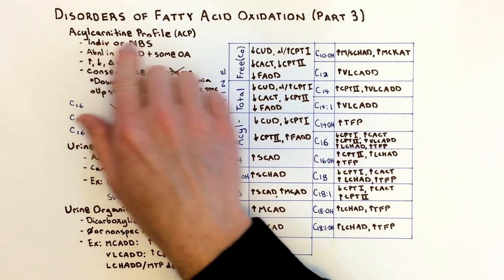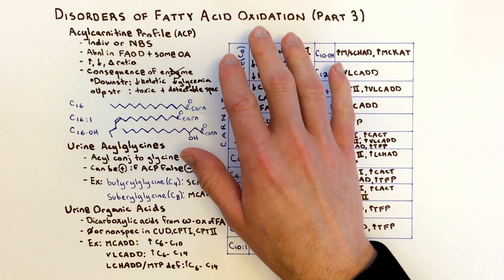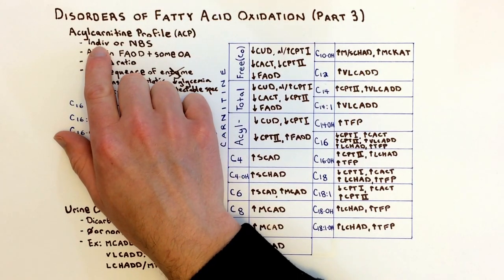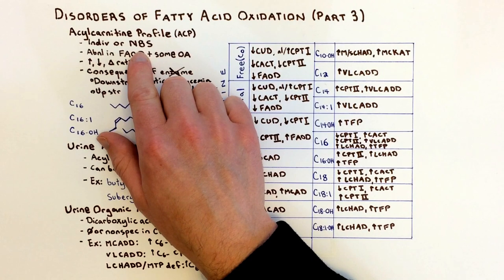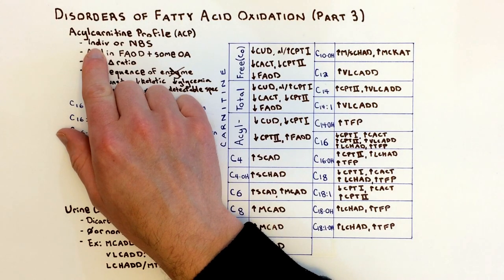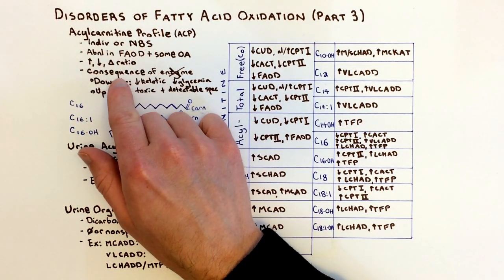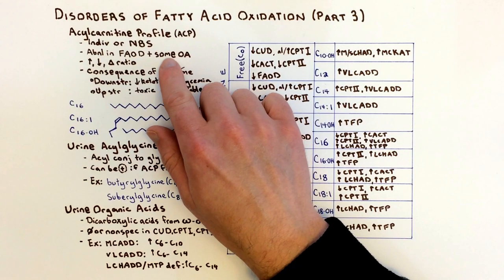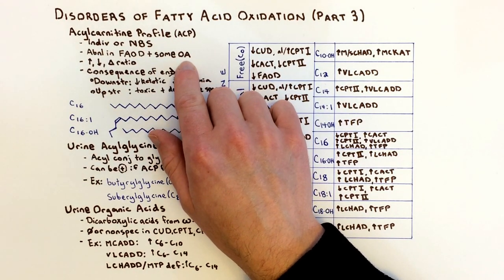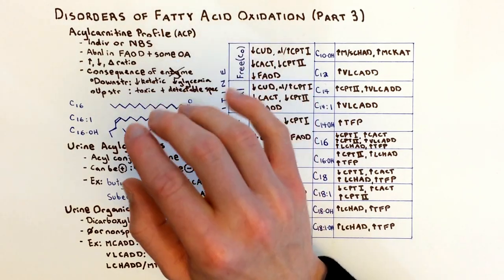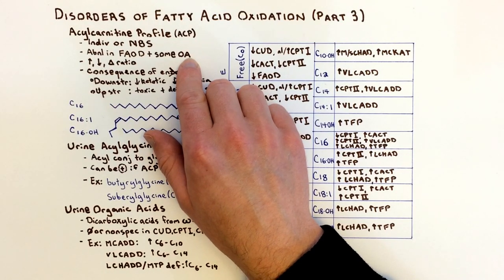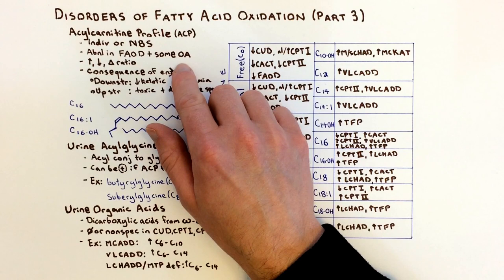So let's dive in. The acylcarnitine profile is a look at various species of acylcarnitine. It's done either as an individual test you would order or as part of the newborn screen. In either case, it's done by mass spec of either plasma for an individual test or a blood spot if ordered via the newborn screen. You can see abnormalities in the acylcarnitine profile in the disorders of fatty acid oxidation and also in some of the organic acidurias.